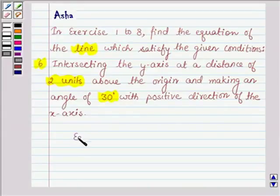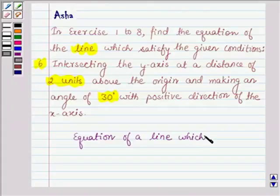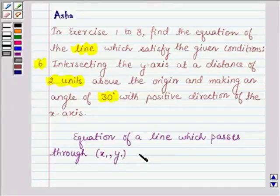First, let us learn how to find the equation of a line which passes through a given point. Let the point be (x₁, y₁) and let the slope of the line be m.